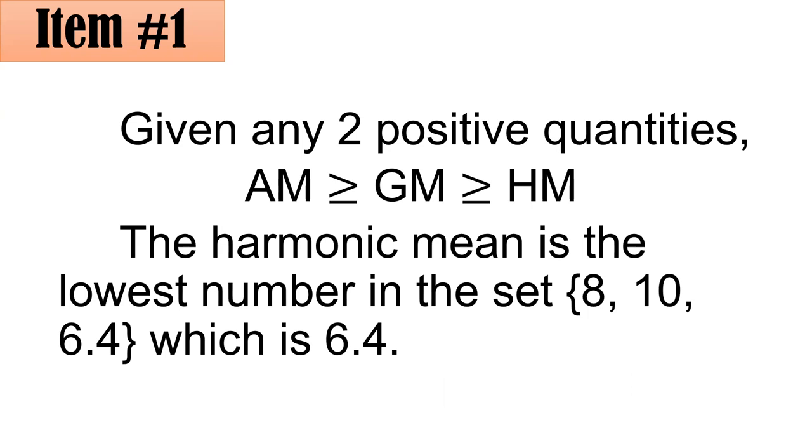According to the people who commented, many of you answered letter A, 6.4. Given any two positive quantities, we have the AM-GM-HM inequality. AM stands for the arithmetic mean, GM stands for the geometric mean, and HM stands for the harmonic mean. This theorem states that the arithmetic mean is greater than or equal to the geometric mean, and the geometric mean is greater than or equal to the harmonic mean. Since harmonic mean is the lowest among the three, and in among the options 8, 10, and 6.4, 6.4 is the lowest. Therefore, 6.4, letter A, is the harmonic mean. It also follows that 10 is the arithmetic mean, and the GM here, the geometric mean, is 8.